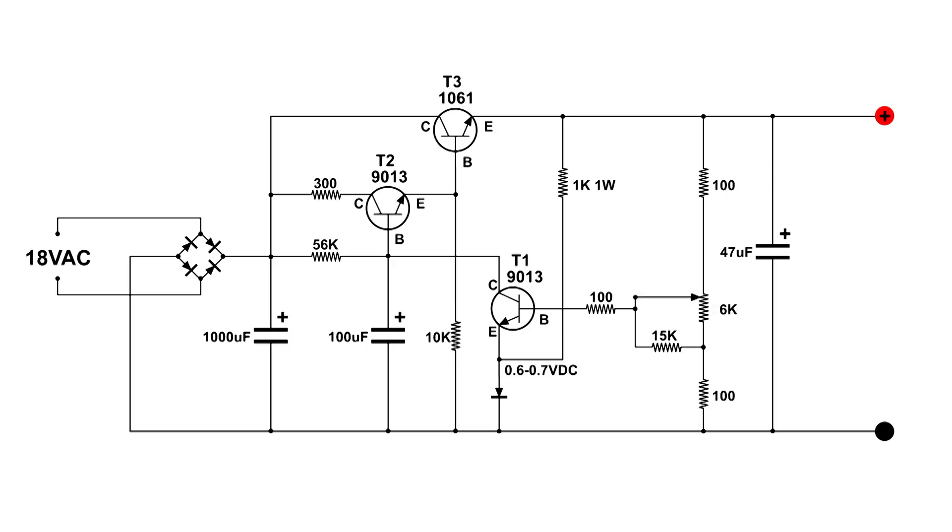And if we turn it up all the way, then we have 15K across 10K, which adds up to be a total of 6K ohms.